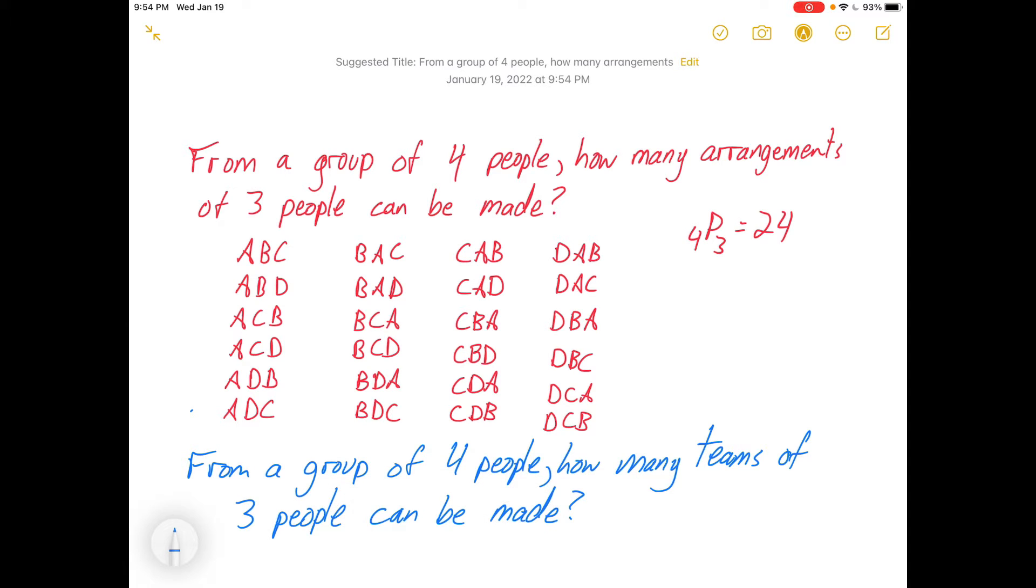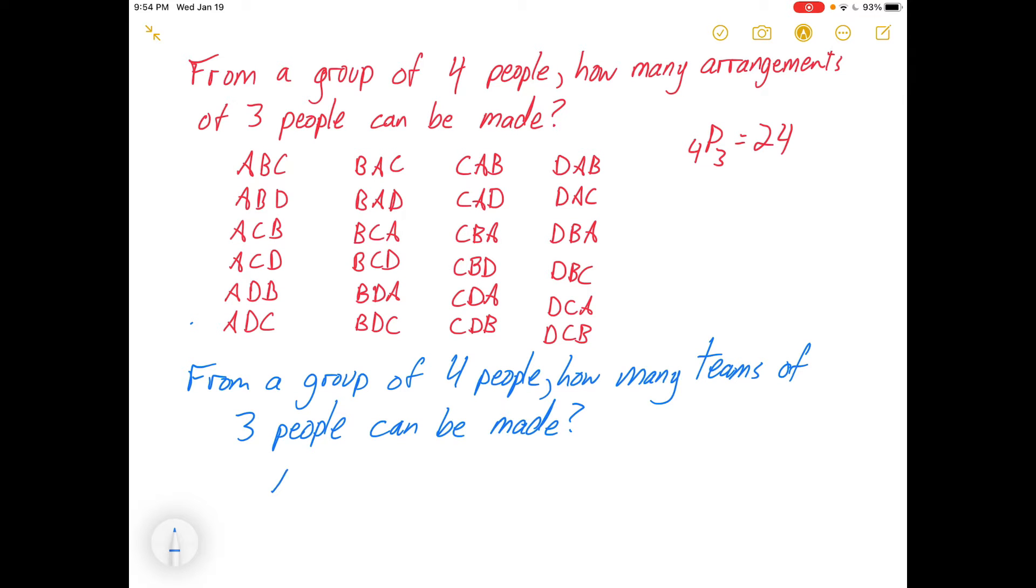From a group of four people, how many teams of three people could be made? In other words, if the order didn't matter, how many ways can you arrange these people? Well, you could have person A and person B and person C, you could have person A and person B and person D. You'd have person A and C and person... oh no, hold on. That's the same as the first one. So that's really a repetition in terms of teams.